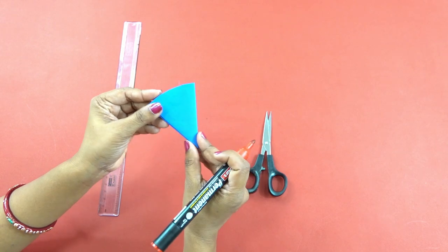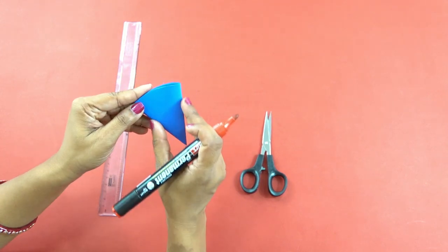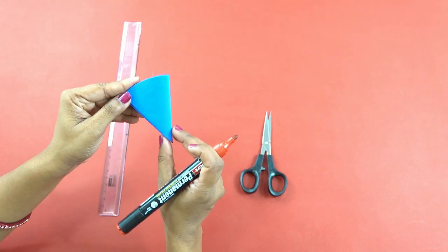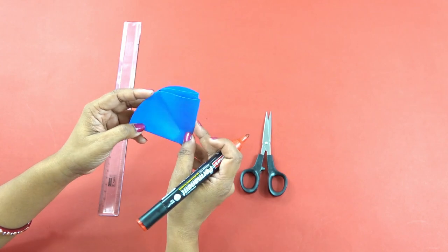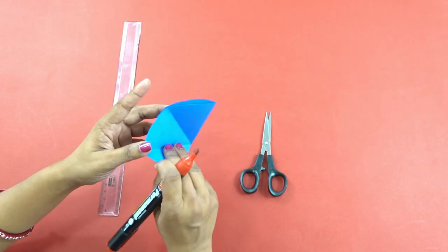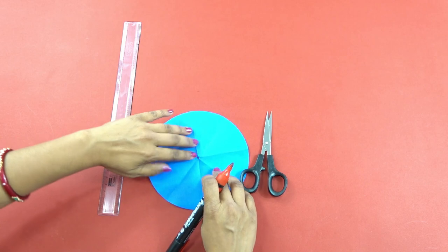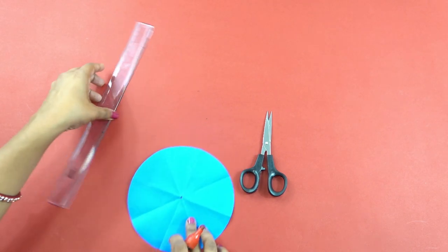And now later on one more fold, so you have got a triangular portion of the circle. If you open it, you will get marks in this manner.